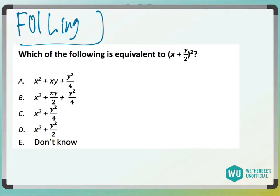Alright, so for foiling, we need to expand this. x plus y over 2 squared would be x plus y over 2 times x plus y over 2.